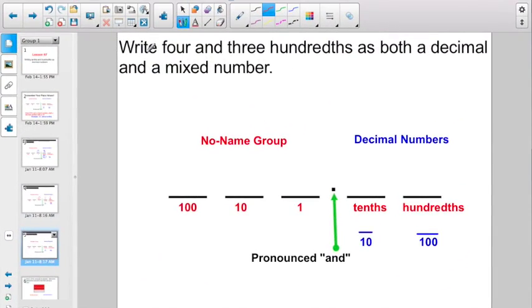Here they're asking us to write four and three hundredths as both a decimal number and as a mixed number. So let's do it in reverse this time. Let's write it as a decimal first. Four and three hundredths. So I want a four in the ones place. And where do I want to put the three? Right here? No,